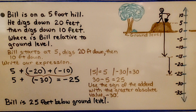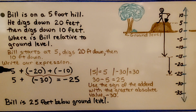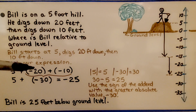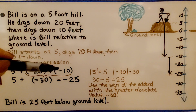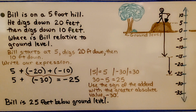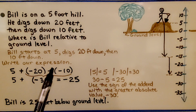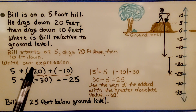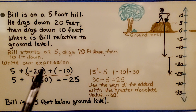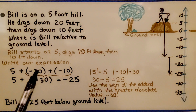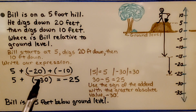We can write our expression as positive 5, because he's up on a hill, plus negative 20 for digging down, plus negative 10 for digging down again. We can add these. We have a negative and a negative — we add them together and we're going to get a negative. That's negative 30.